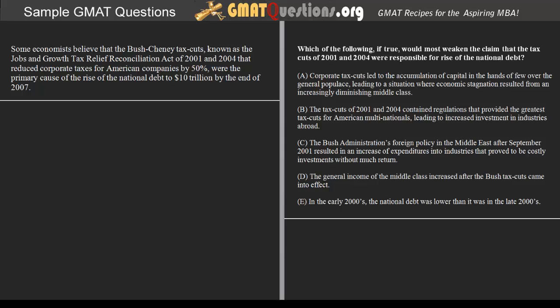As we can see, we're being asked to provide an answer choice that would most effectively weaken the claim. Whenever we're asked to either strengthen or weaken a claim, argument, or conclusion, we're dealing with an arguments evaluation type question. So what is the claim that we're trying to weaken exactly? The claim being made is that the tax cuts of 2001 and 2004 were responsible for the rise of the national debt. What we have to determine is on what basis the claim is being made, since what we're effectively trying to weaken is the logic underlying such a conclusion — that the tax cuts of 2001 and 2004 were in fact responsible for the rise of the national debt.